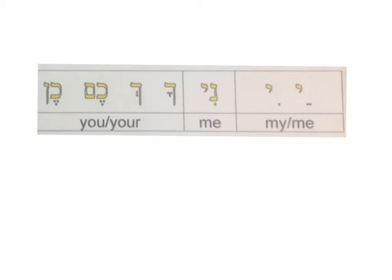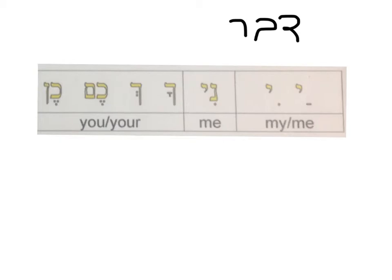Welcome to the yellow banner list of Hebrew suffixes. When you put them at the end of a word, it makes the word possessive — meaning the word refers to something belonging to a specific person. For example, 'davar,' which means 'thing': if you add 'i' at the end, it becomes 'davari,' meaning 'my thing.'